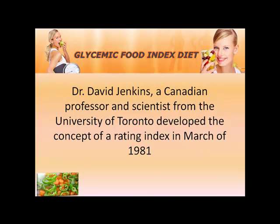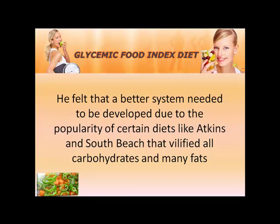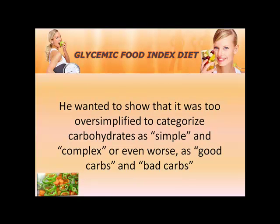Dr. David Jenkins, a Canadian professor and scientist from the University of Toronto, developed the concept of a rating index in March of 1981. He felt that a better system needed to be developed due to the popularity of certain diets like Atkins and South Beach that vilified all carbohydrates and many fats. He wanted to show that it was too oversimplified to categorize carbohydrates as simple and complex, or even worse as good carbs and bad carbs.